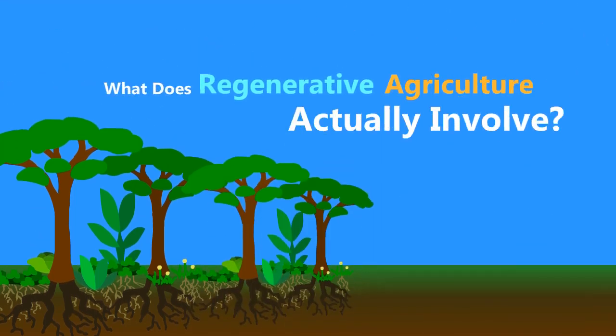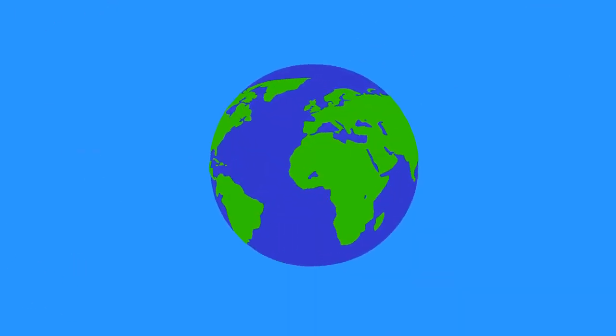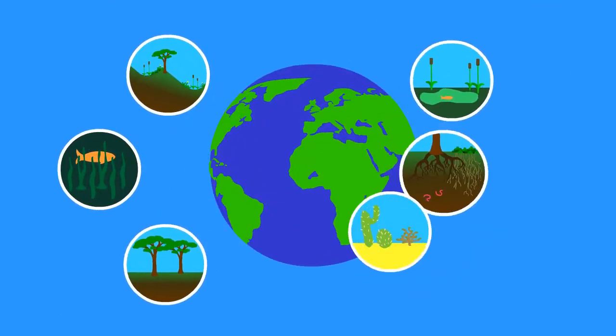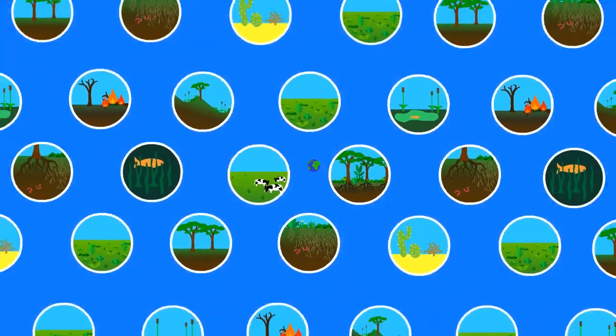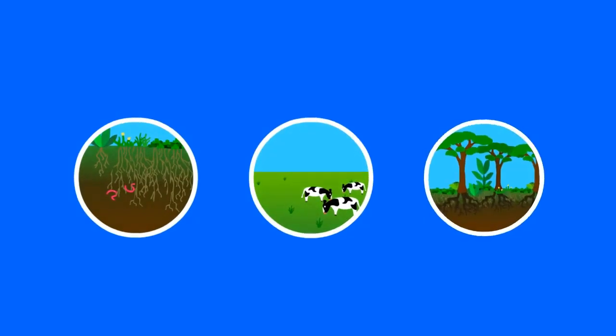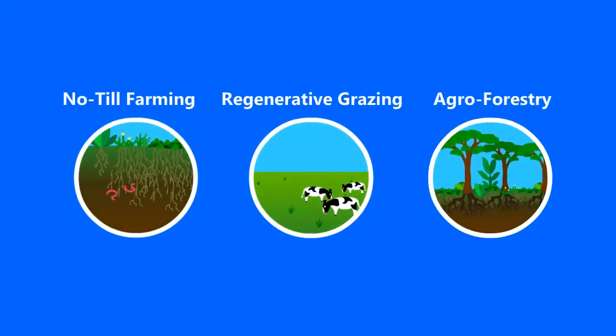So what does regenerative agriculture actually involve? Answering this question is pretty tricky because the practices that work best largely depend on the land that's being worked with. So the variety of different practices border on infinity, a bit more than this video can cover. However, let's look at three common forms that regenerative agriculture can take.